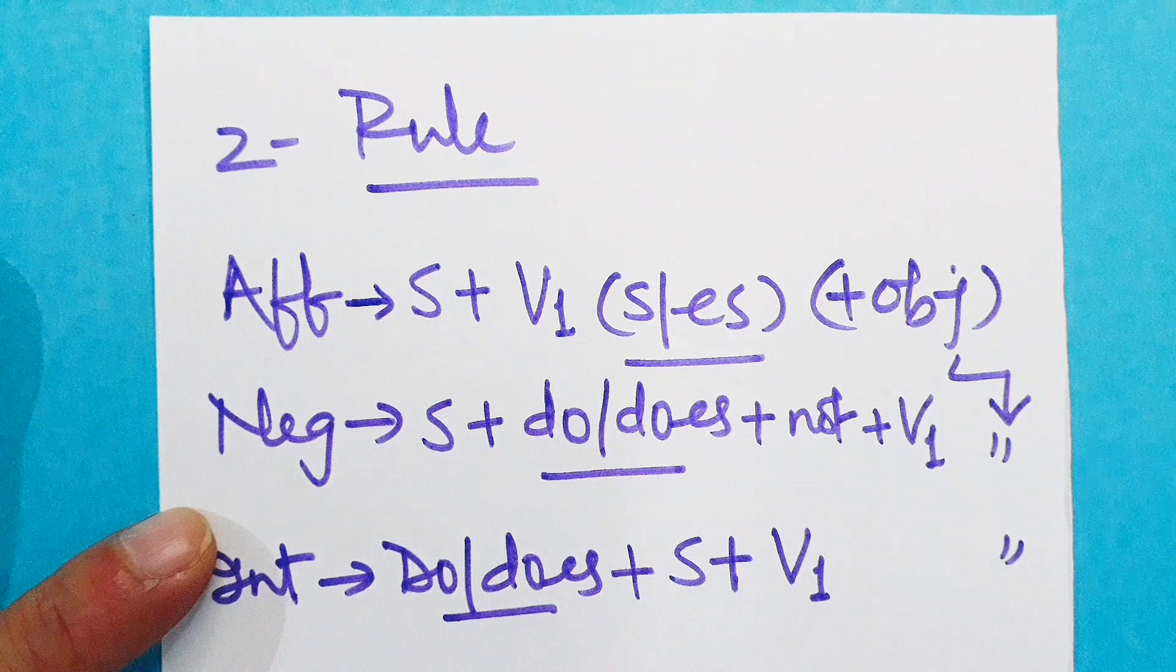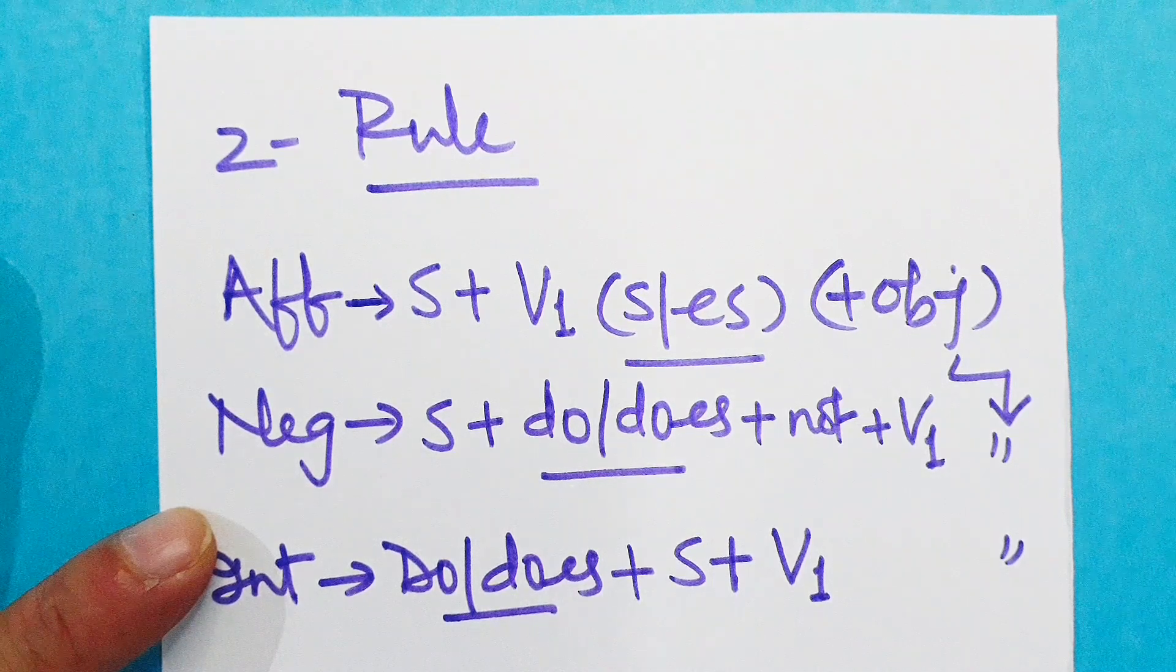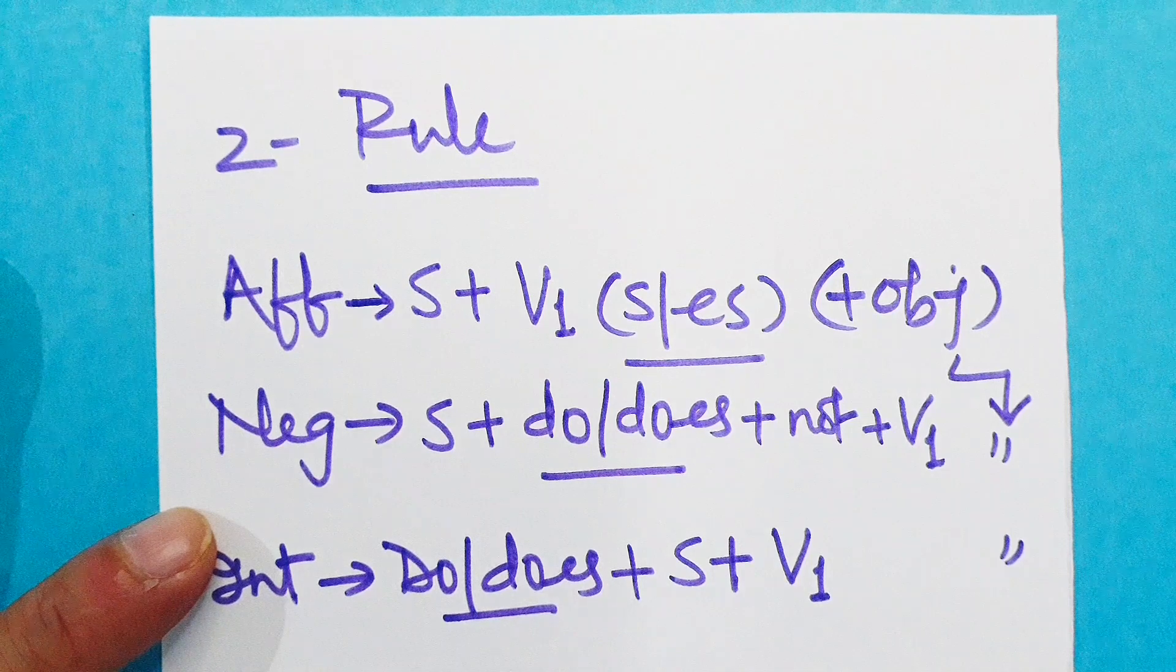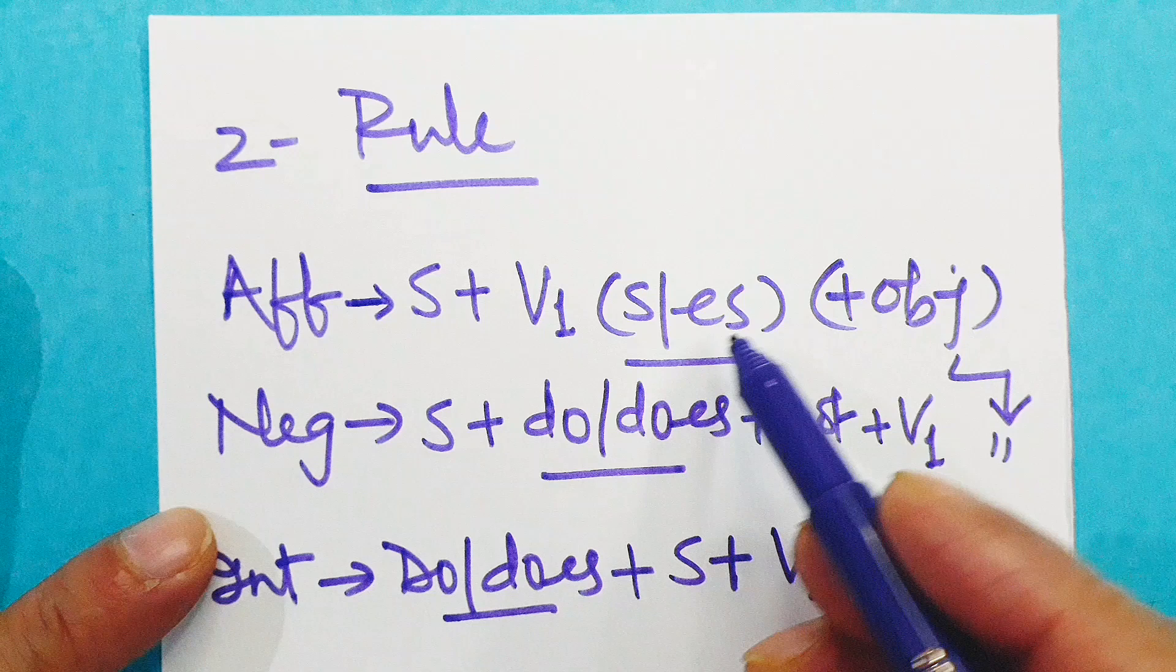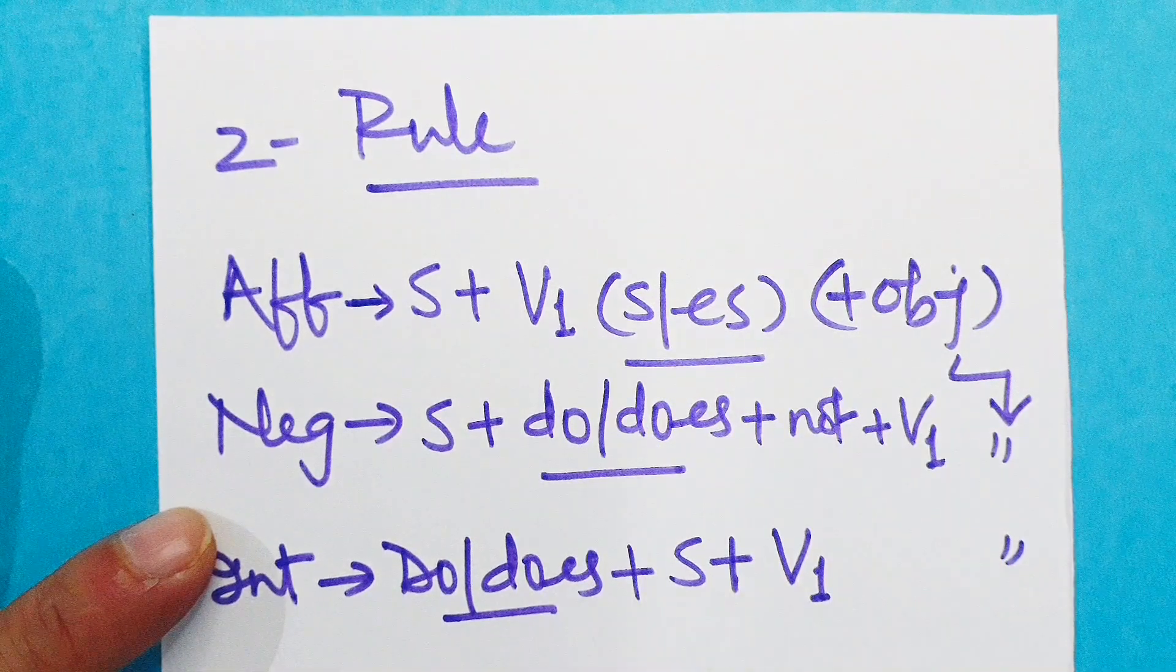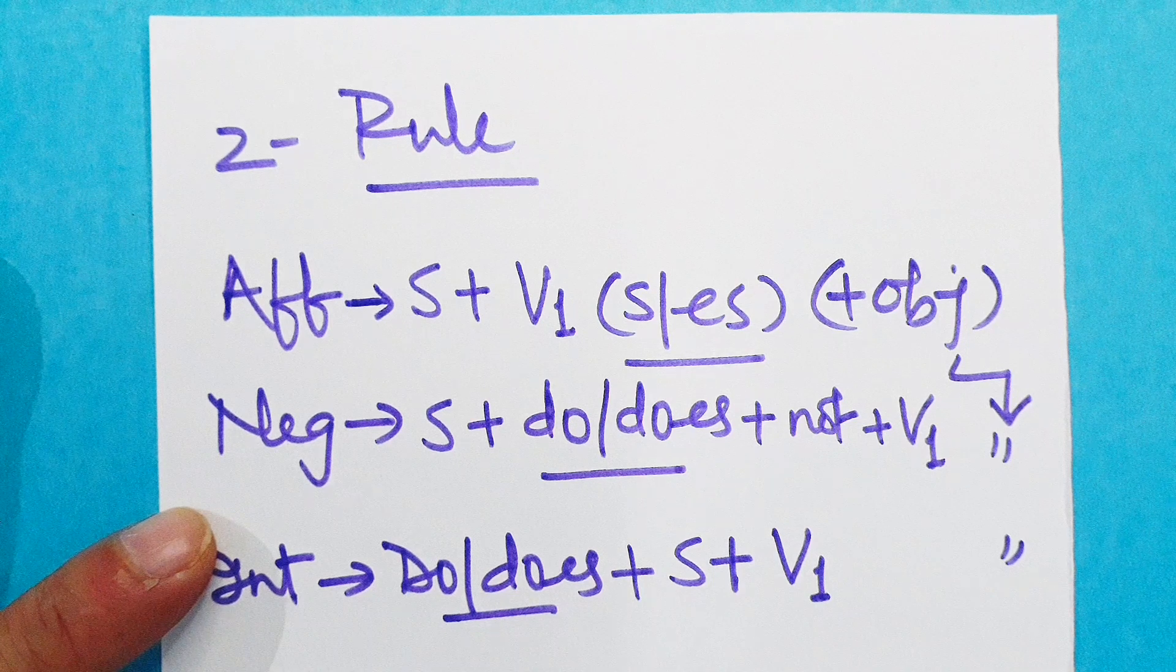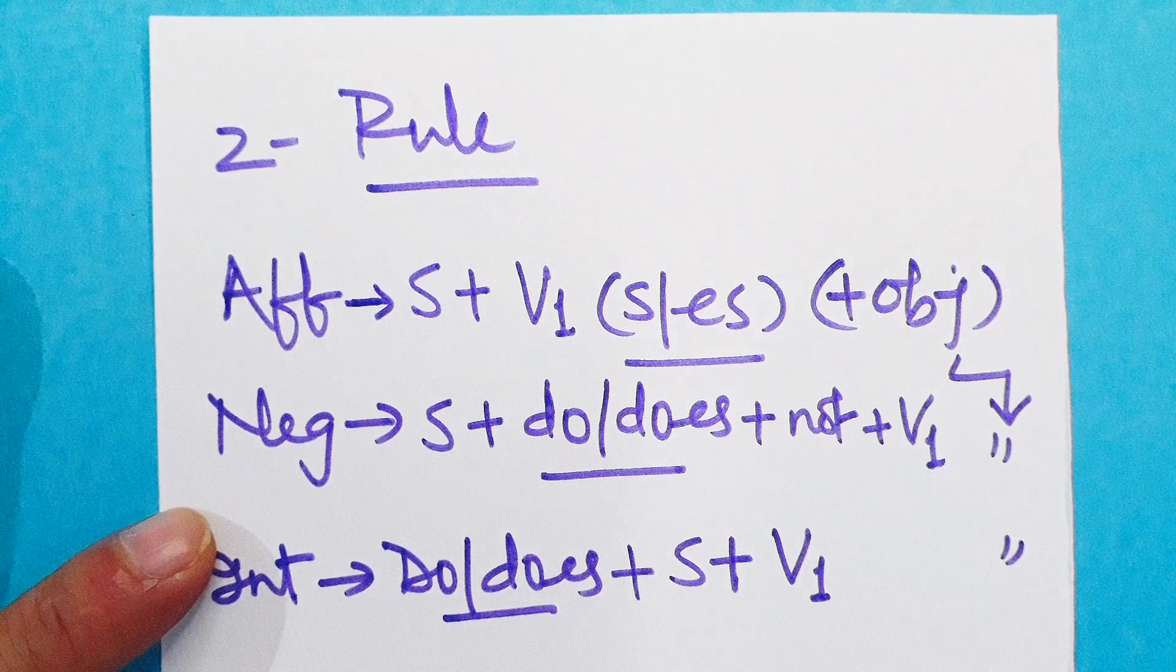Now the point is, what's third person singular? Third person singular means any singular noun or third person singular pronoun: he, she, it. When subject is third person singular, then we have to add S or ES to V1. For better understanding, we have to take up two types of sentences: one with subject third person singular, and the other with any other subject which is not third person singular.